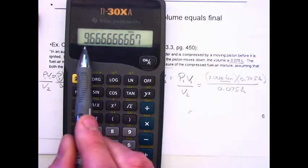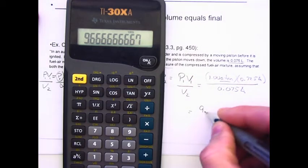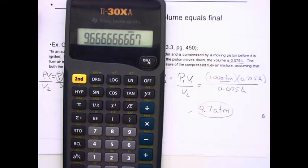So instead of 9.666, it is simply 9.7. So 9.7 atmospheres is the answer to that question.